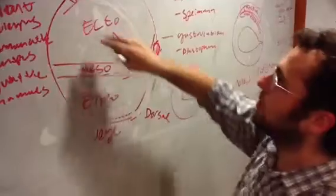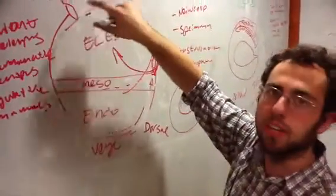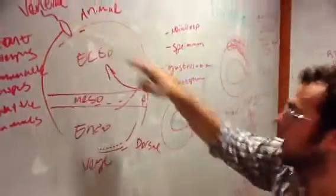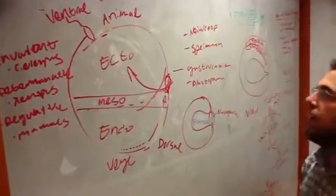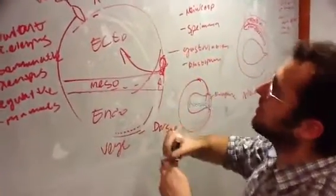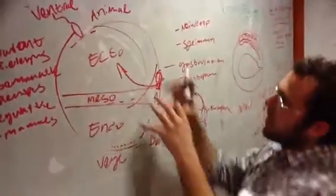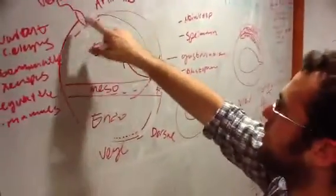Sperm meets egg and the point of sperm entry defines the ventral axis. Whatever is opposite of the point of sperm entry is the dorsal side. When the sperm meets the egg there's a rotation and then the first cell division divides the cell into two and that's along the ventral dorsal axis.